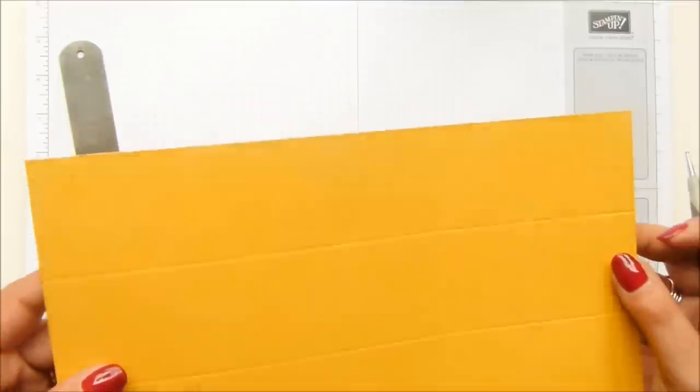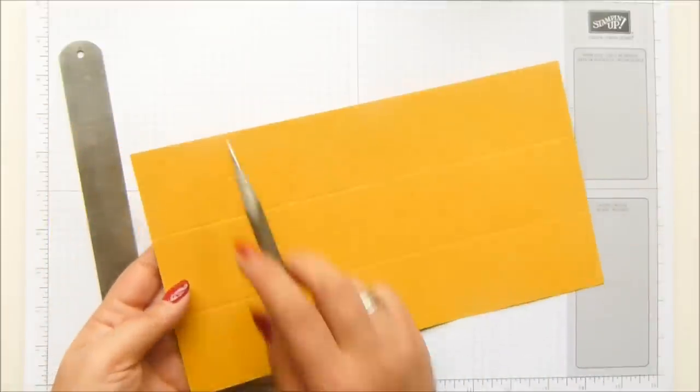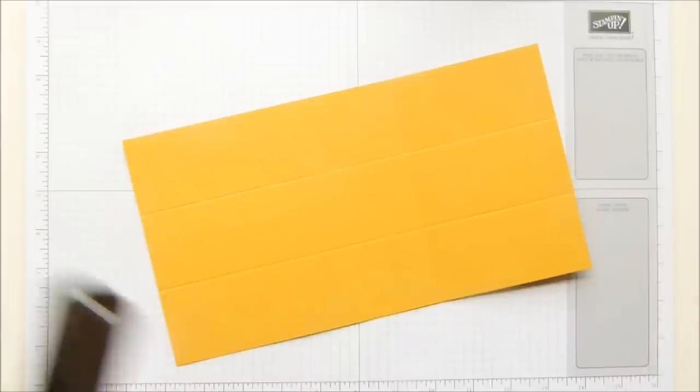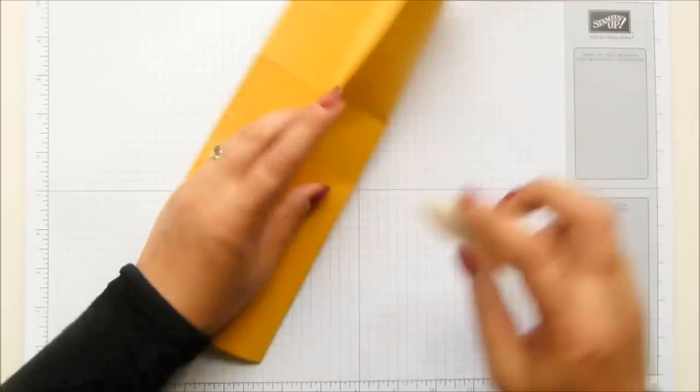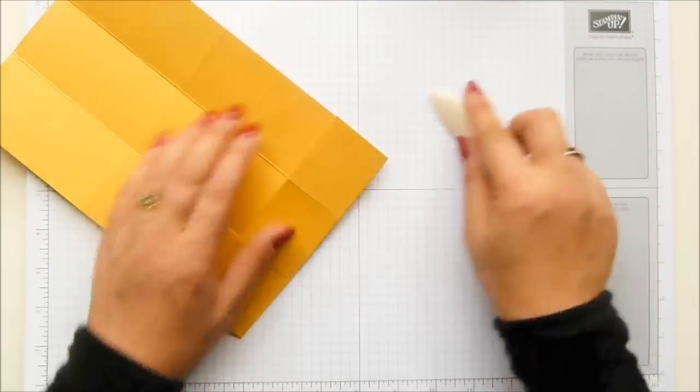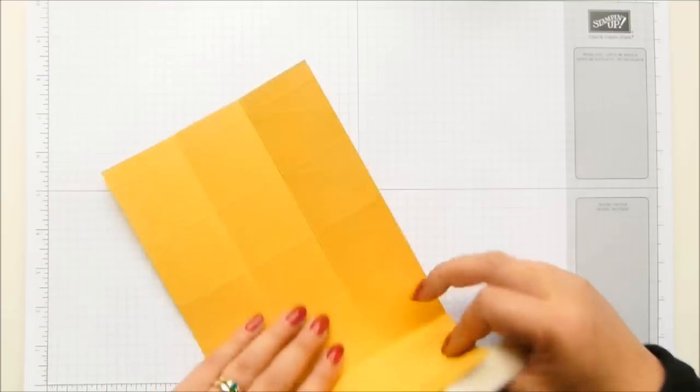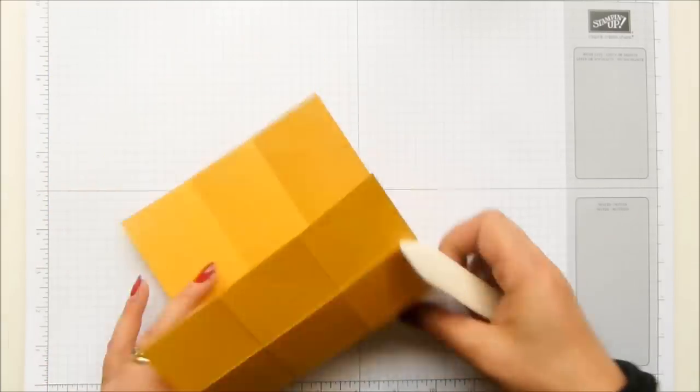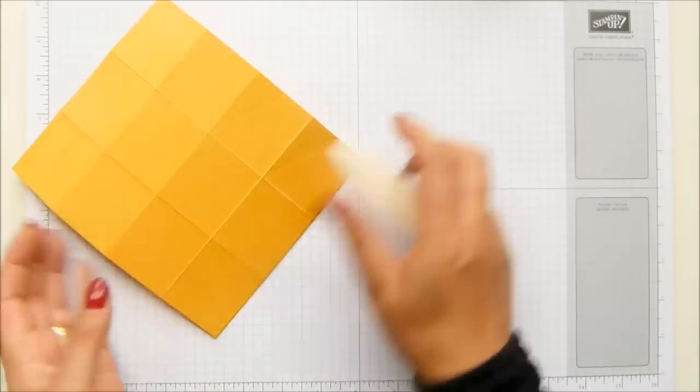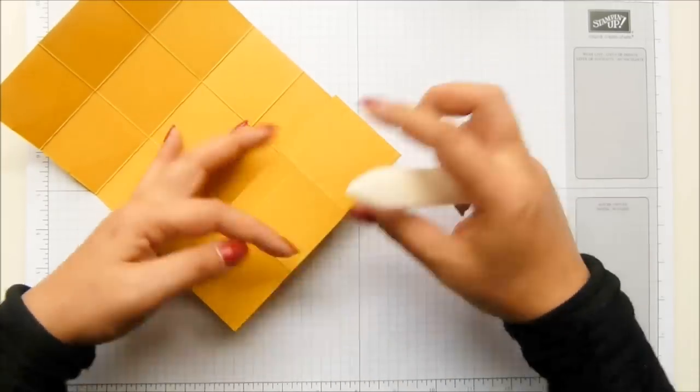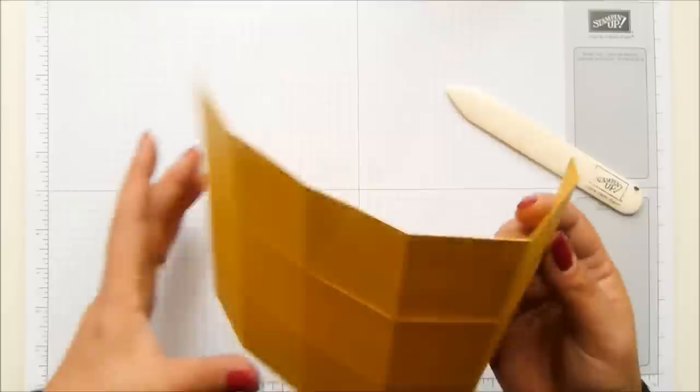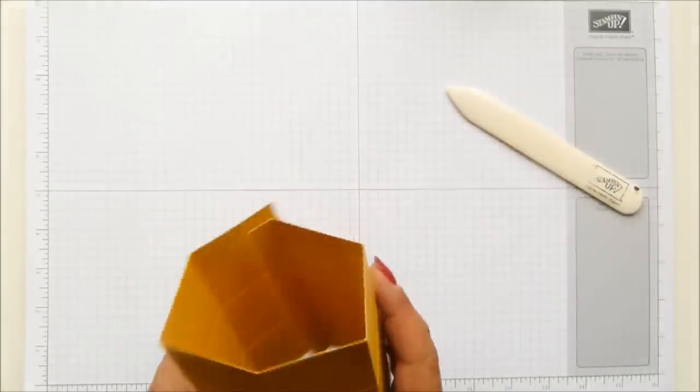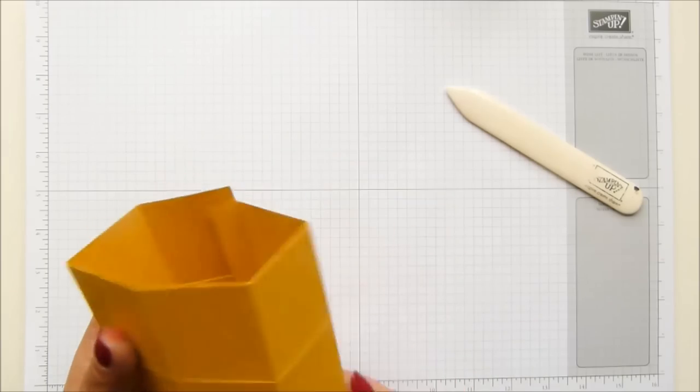Okay. So now you can see the scorelines that I've created. What we're going to do is we're going to fold and burnish all of the straight ones. So ignore those diagonal ones at the moment. And we're going to ignore these ones for the minute. And I'm going to explain why after we've put it together.